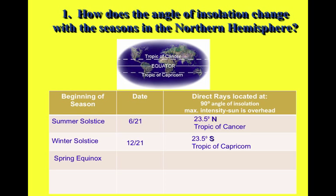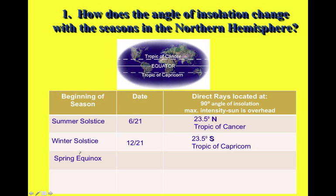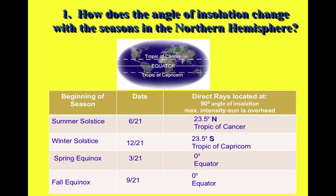Now we get to the equinoxes. The spring equinox is the first day of spring, which occurs about March 21st — it can be the 20th or sometimes the 22nd. As implied by its name, equinox, the direct rays are located at the equator at zero degrees. The same is true for the fall equinox, which occurs on September 21st — again, the direct rays are located at the equator.